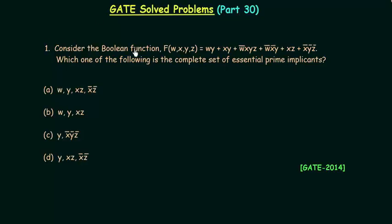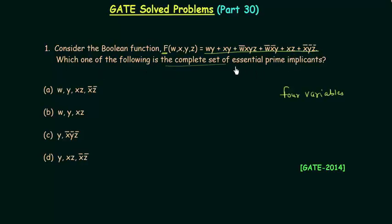In the first problem, consider the Boolean function f. f is the Boolean function with four variables w, x, y, and z. We have four variables in function f. This is the given logic expression — which one of the following is the complete set of essential prime implicants? So we have to find out essential prime implicants for the function f.